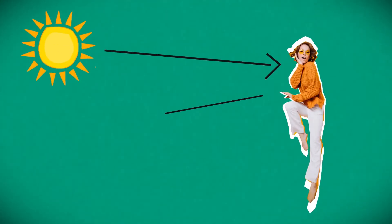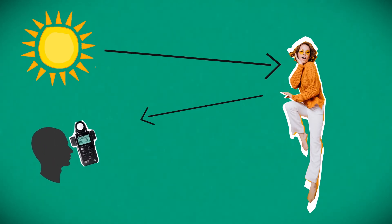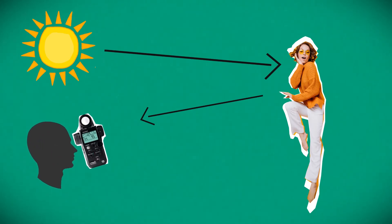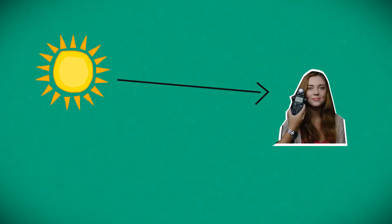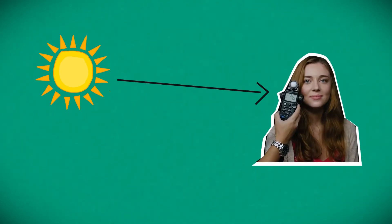Spot or reflective metering measures the amount of light hitting the subject and bouncing back to the camera. An incident reading is measuring the light off of a subject.